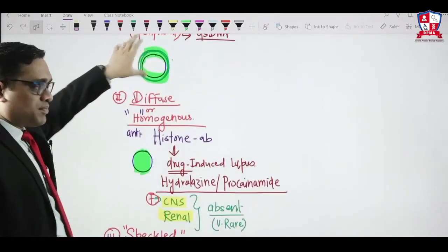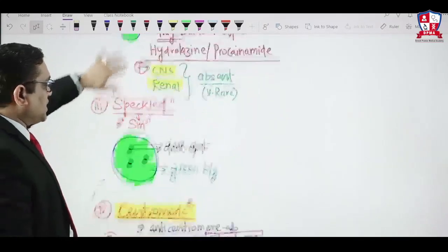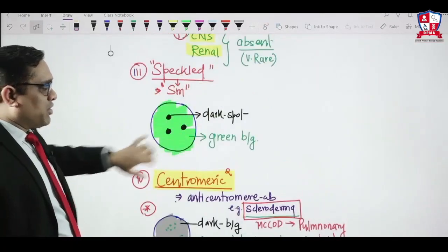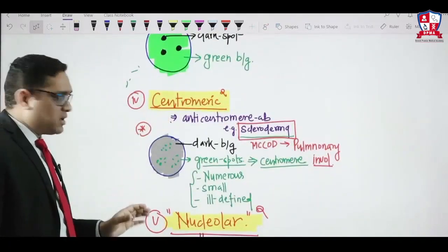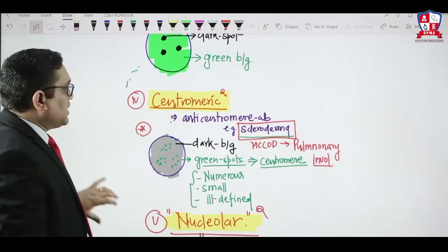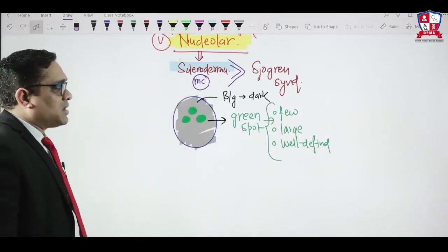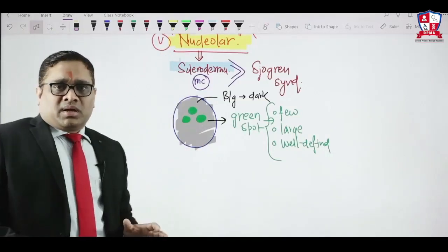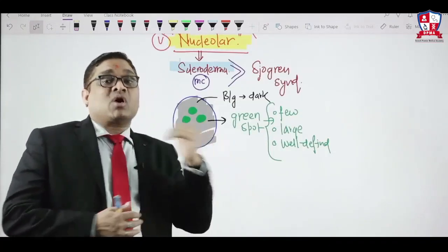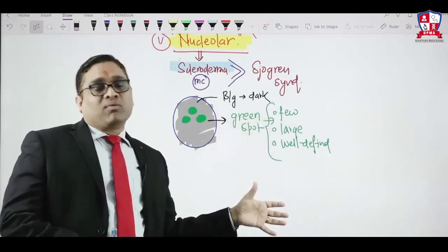Summary of the 5 immunofluorescence patterns: (1) rim — peripheral green; (2) diffuse homogenous — entire nucleus green, anti-histone, drug-induced lupus; (3) speckled — green background with dark spots, Smith antibodies; (4) centromeric — dark background with numerous small ill-defined green spots, scleroderma; (5) nucleolar — dark background with few large well-defined green spots, scleroderma. Read immunofluorescence carefully — these are definitely future exam questions.